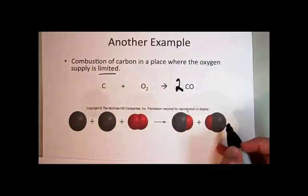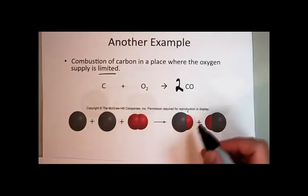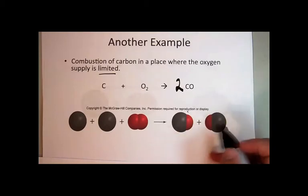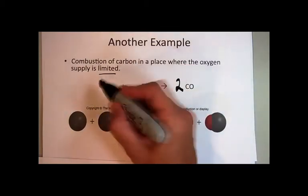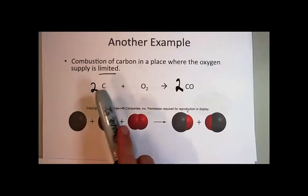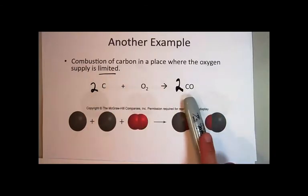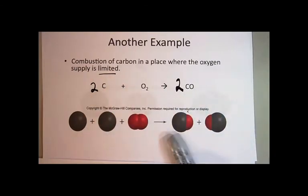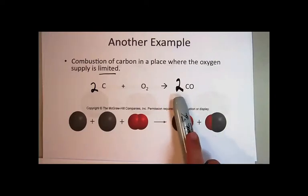And when you do that, you balance out your oxygen, but then you mess up the balancing of your carbon, and then you have to recognize that to properly model this chemical change, you have to put a coefficient two in front of the carbon and in front of the carbon monoxide.